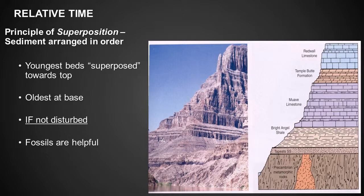In the drawing at the right, can you tell which is the youngest rock and which is the oldest? The red wall limestone at the top is the youngest rock, and the pre-Cambrian metamorphic rocks at the bottom are the oldest rocks.